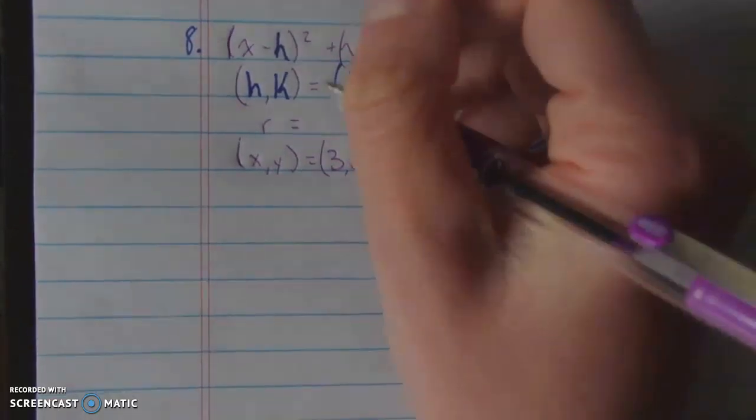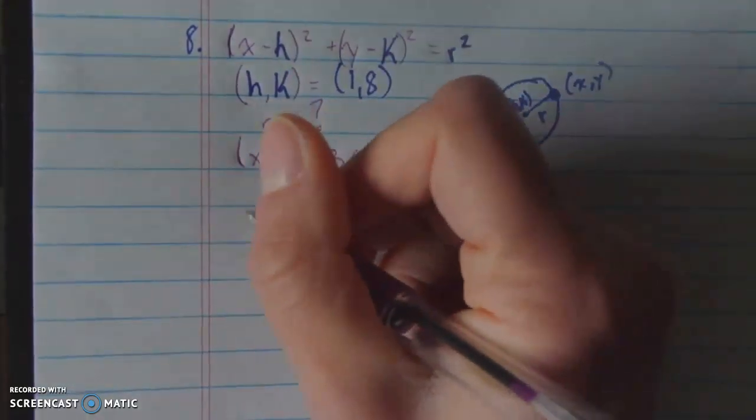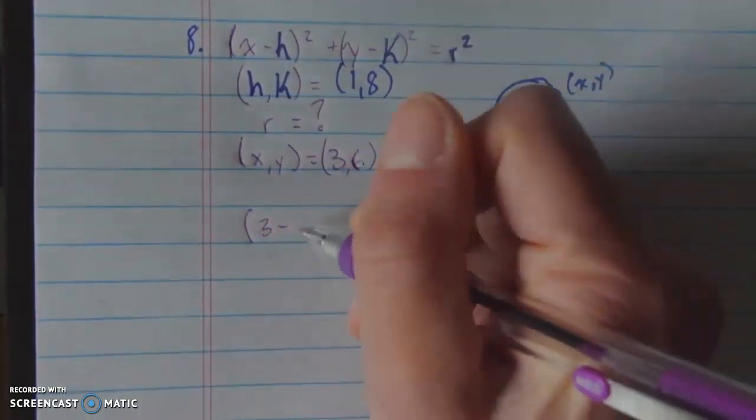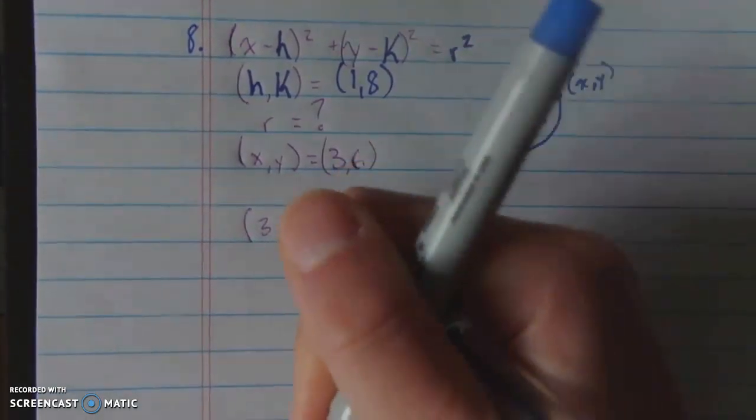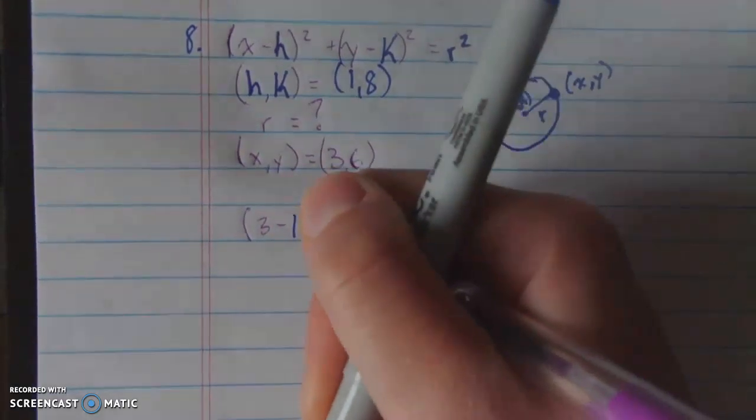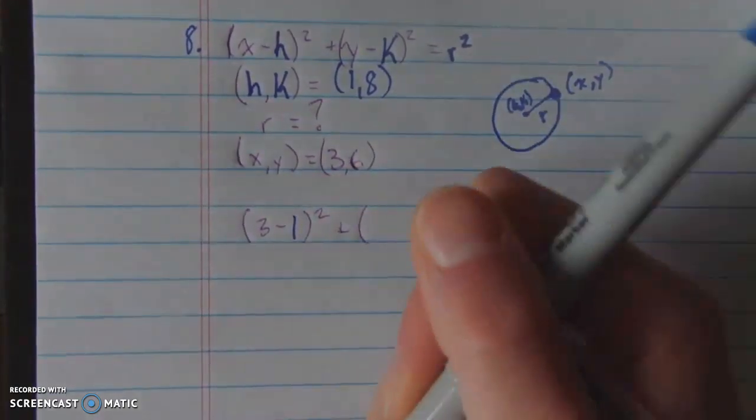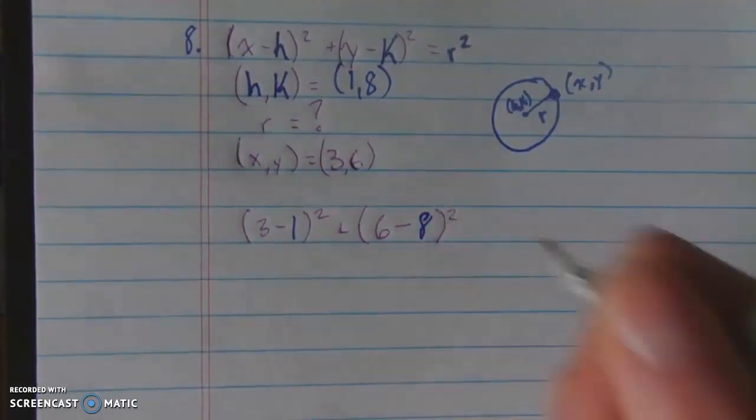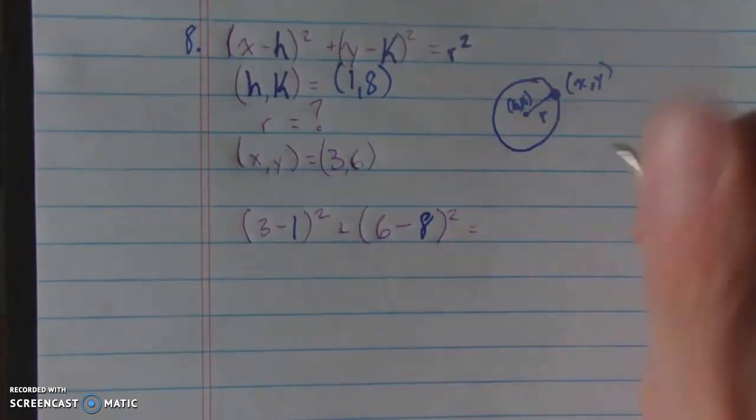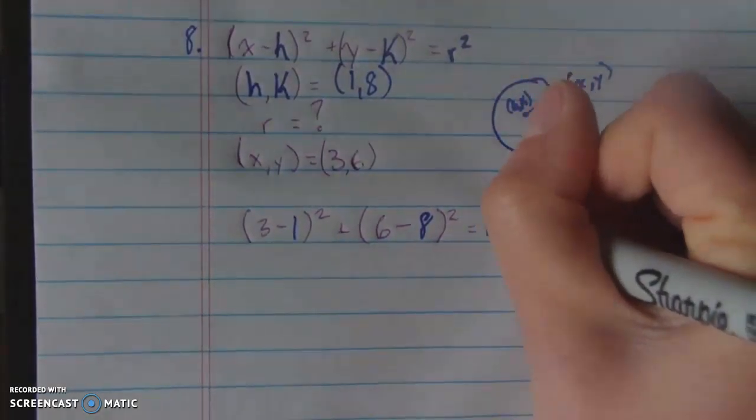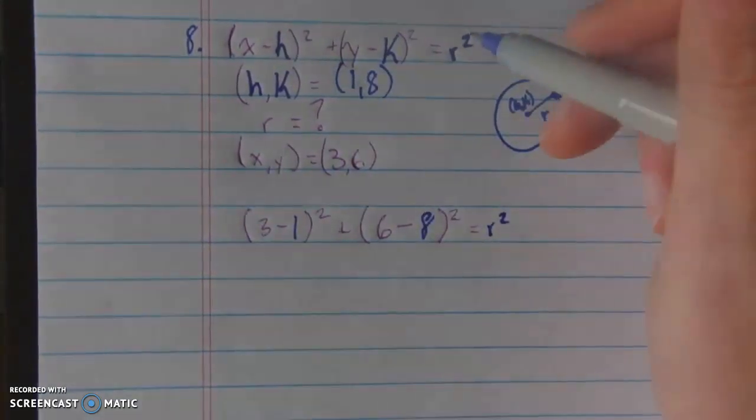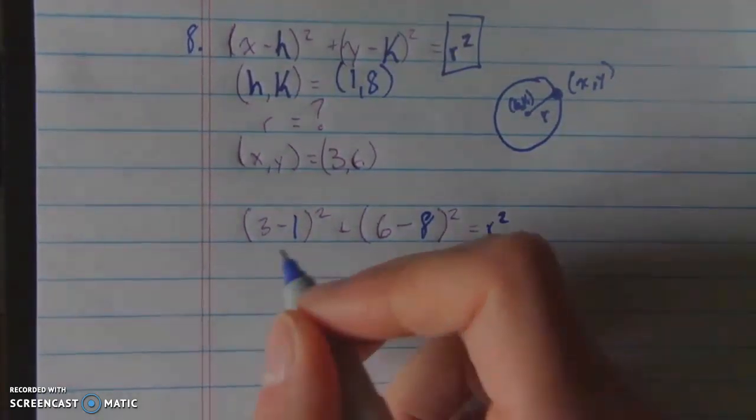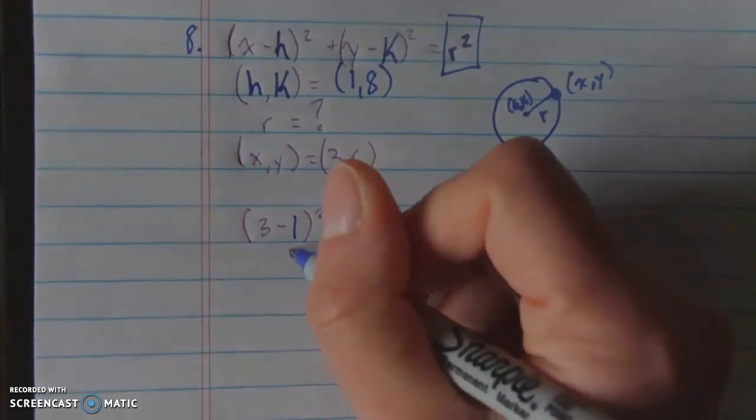Since I know that h, k is 1, 8 and x, y is 3, 6, and I have this equation to help me out or to help me understand the relationship between them and the radius, why not just fill in what I know and see if I can find what I'm missing? So that means that what I'm going to end up with is x, or 3, minus h, 1, square that and add to it y, which is 6, minus k, which is 8.